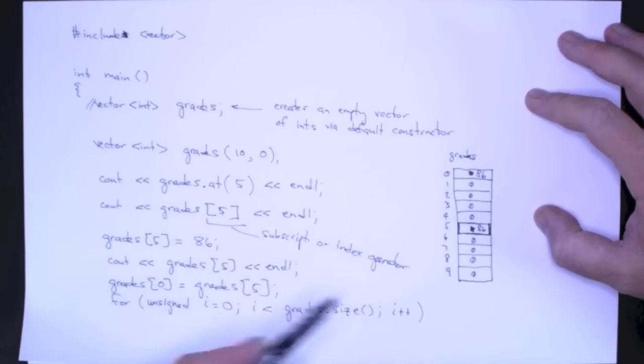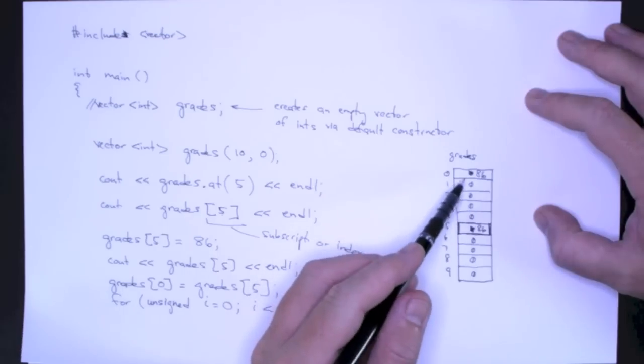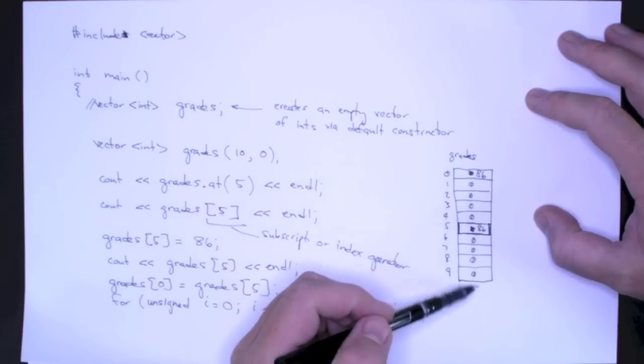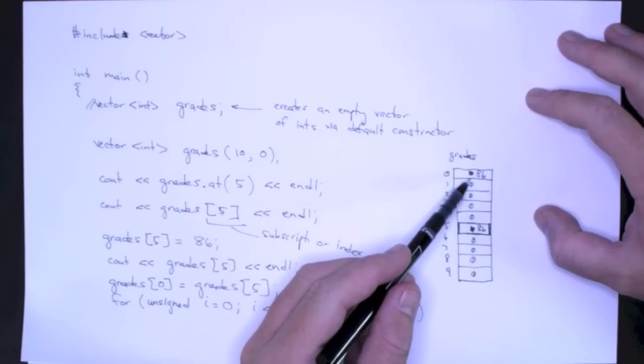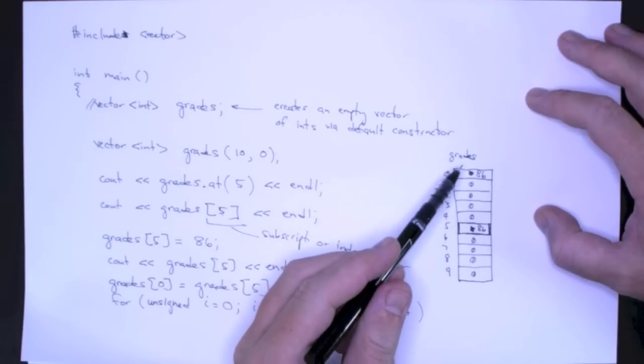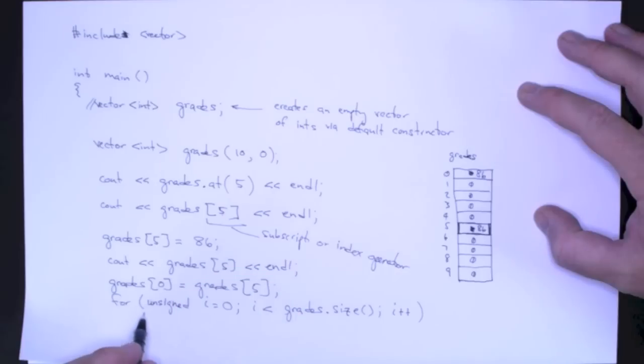And so now in this for loop, we can process the element of the vector. We could be, maybe we want to sum our grades together so that we can compute an average. Maybe we want to set them all to 0. In this case, I'll just print them all out.